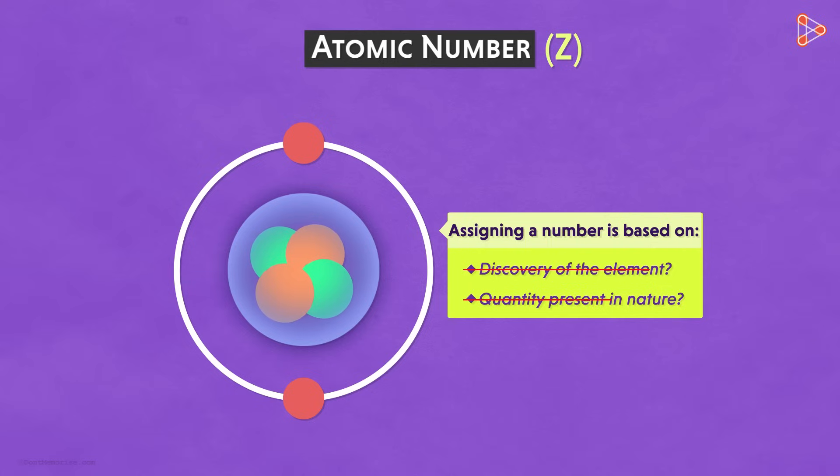One promising way is by numbering based on the number of protons present inside the nucleus of the atom. Yes, it's because the atom of every element has a fixed number of protons in its nucleus. And this number is unique to every element, right?